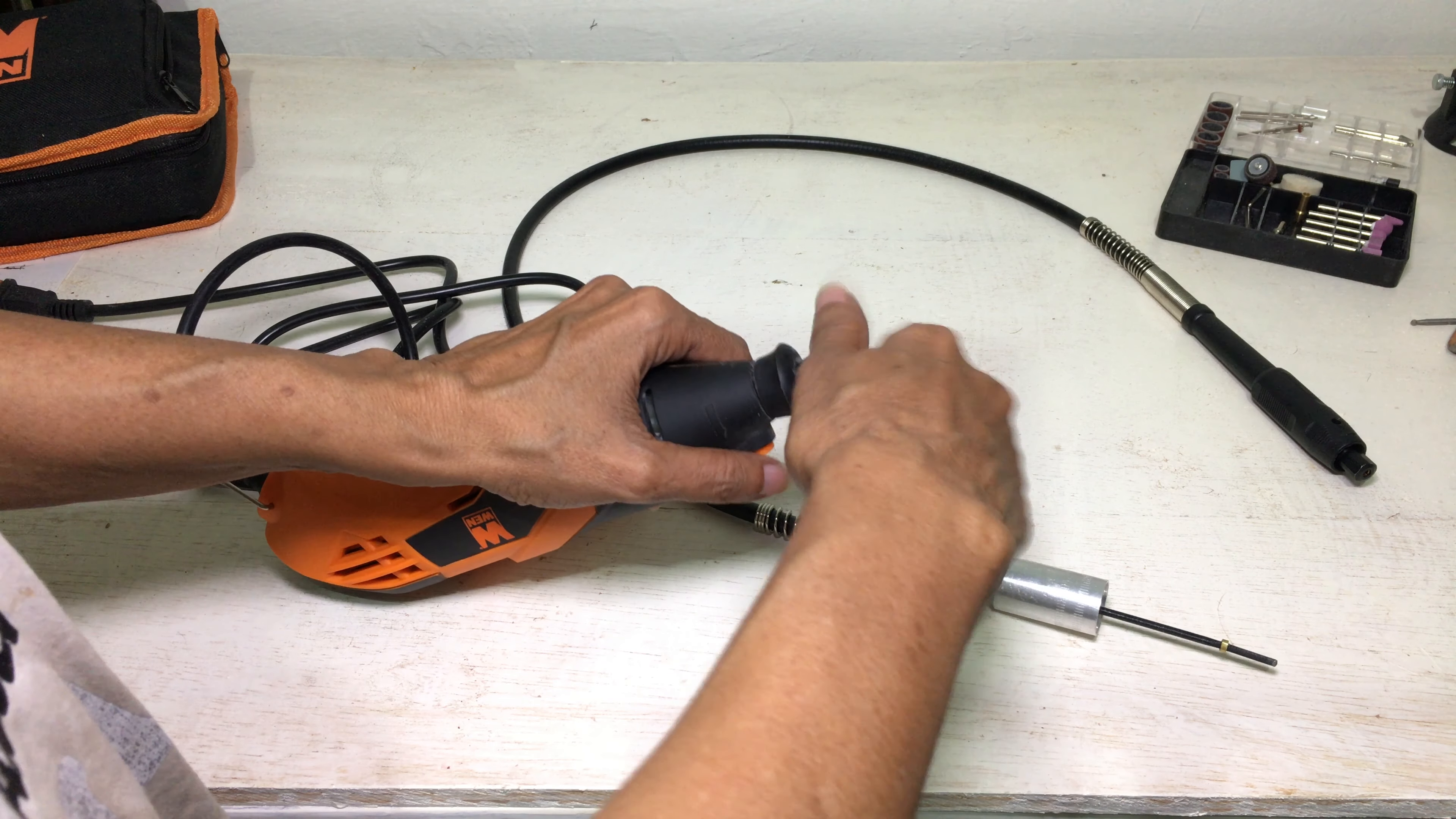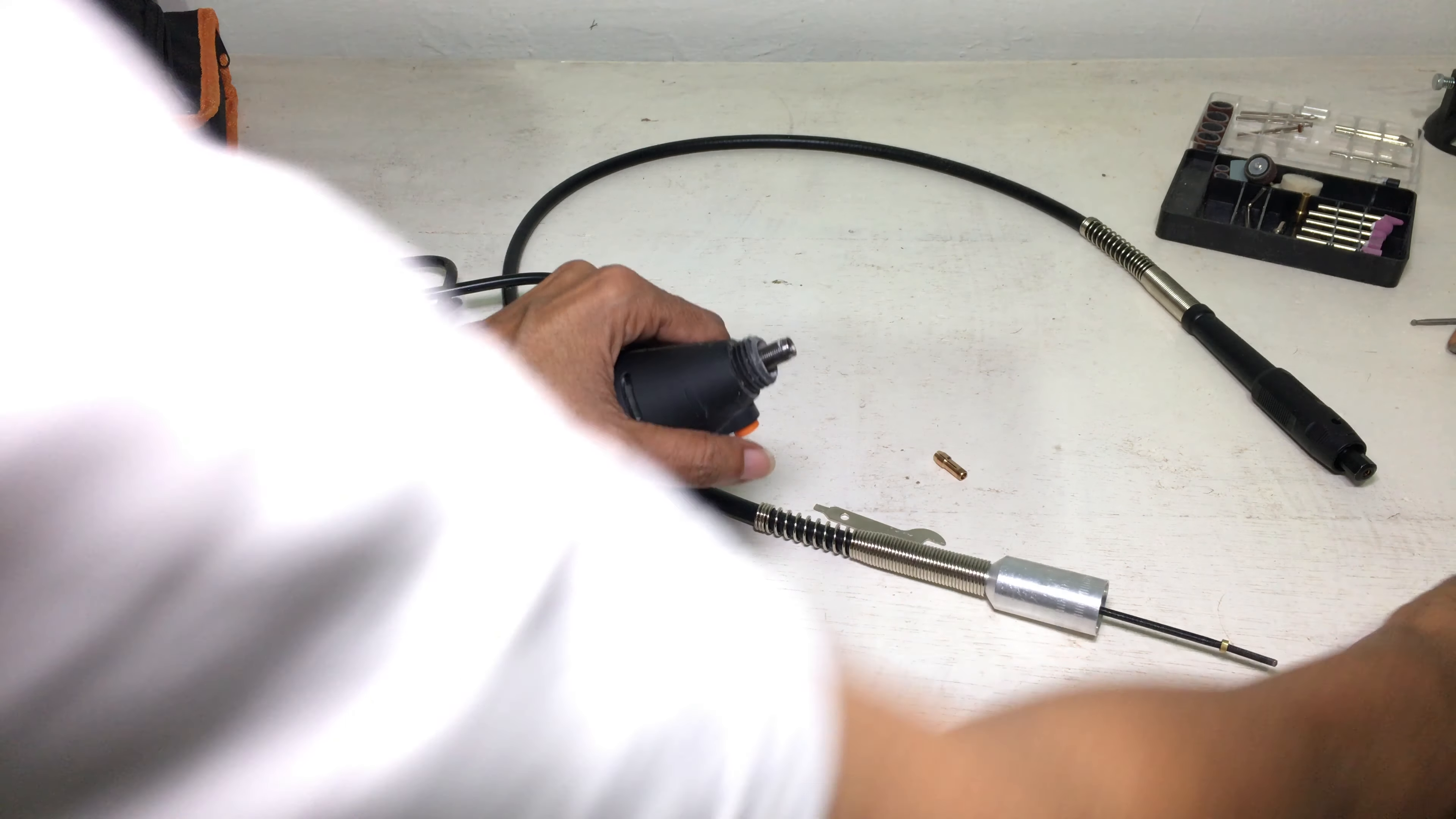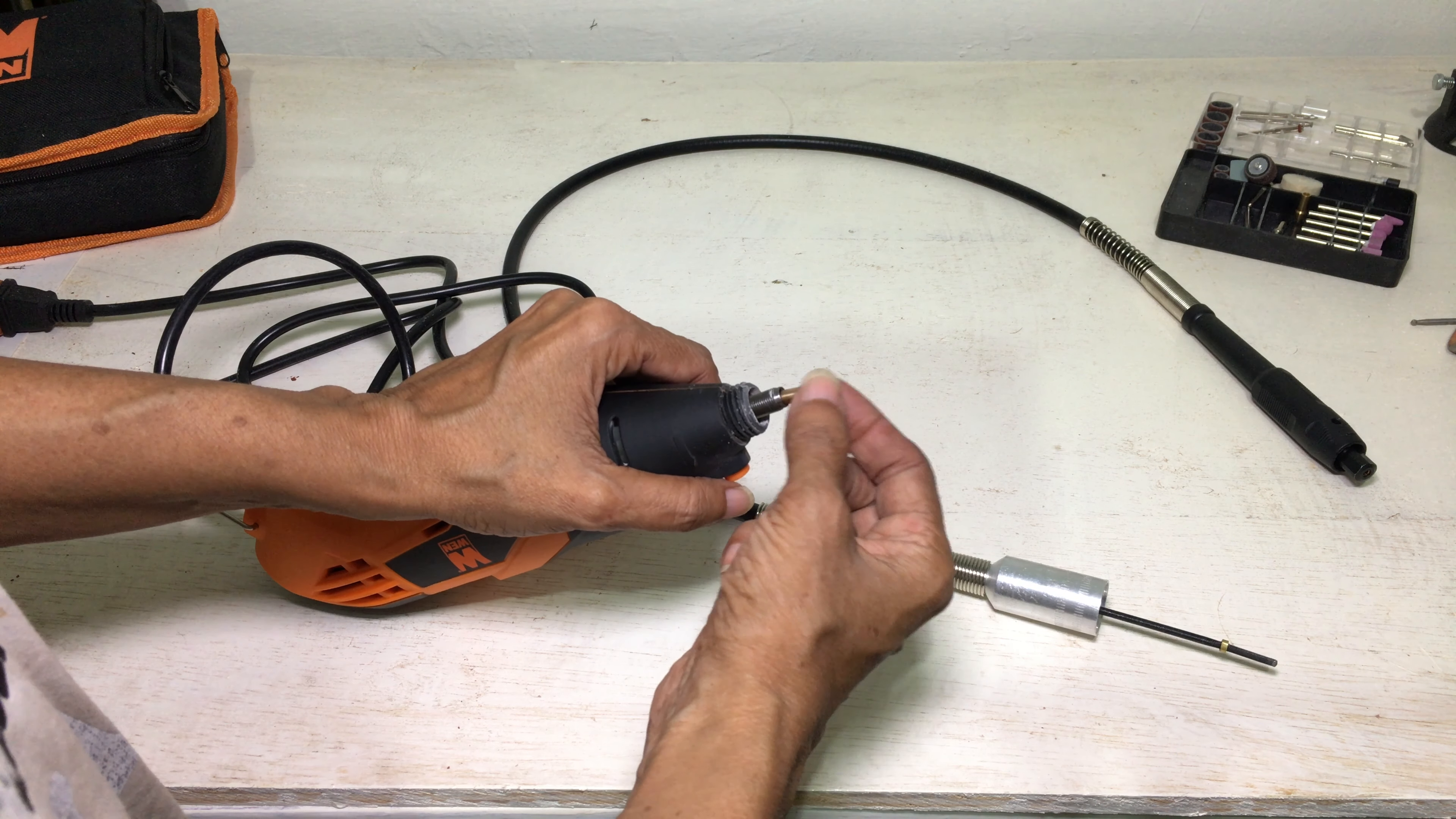To connect the flex shaft, remove the collar and the collet nut. Insert the 1/8 inch collet.